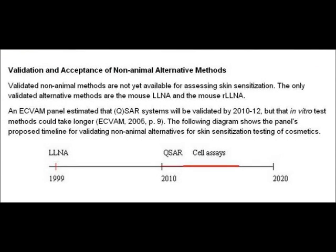Which is a bit worrying when we read this slide, because it says validated non-animal methods are not yet available for assessing skin sensitisation. The only validated alternative methods are the mouse local lymph node assay and the mouse reduced local lymph node assay, which are both animal tests anyway. At the bottom you can see that they are hoping to get full replacement, but at the moment they are nowhere near it. There are no validated tests to replace the animal tests.